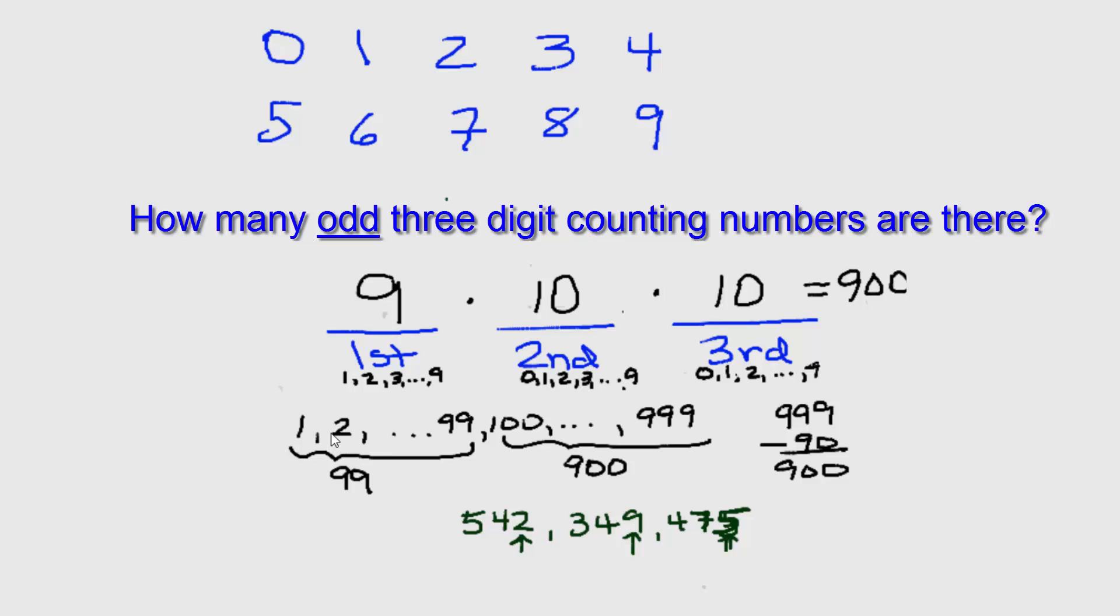Also, we can predict that we're going to have half as many odd 3-digit numbers as the total number of 3-digit numbers, because half of those numbers are even and half are odd. So if we divide 900 by 2, we would see that we should get 450 odd 3-digit numbers.